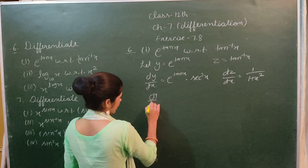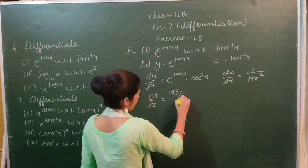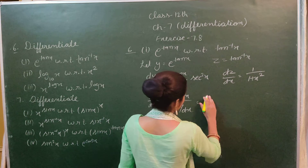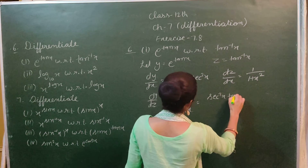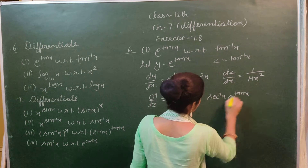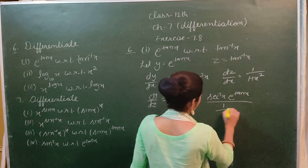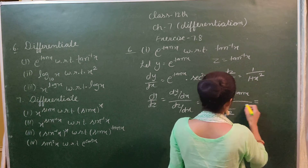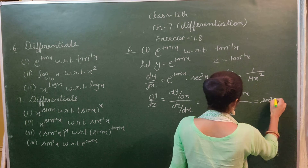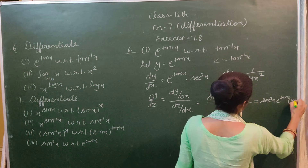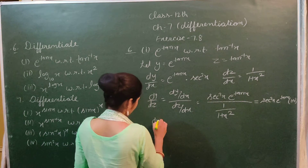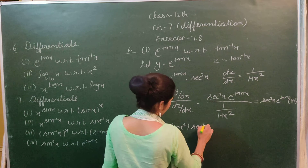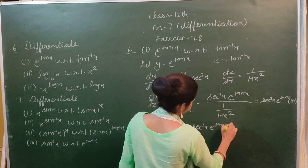Now we find dy by dz. This is computed as dy/dx divided by dz/dx. We have dy/dx as secant square x and dz/dx as 1 by (1 + x²). Therefore dy by dz equals (1 + x²) times secant square x times e^(tan⁻¹x).